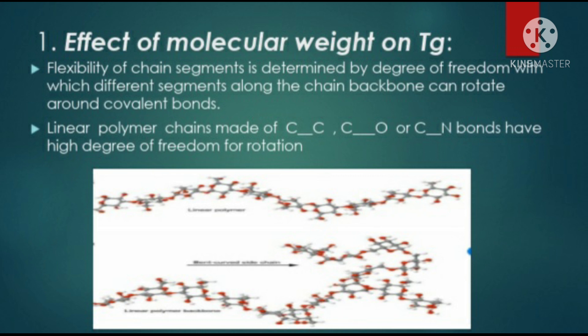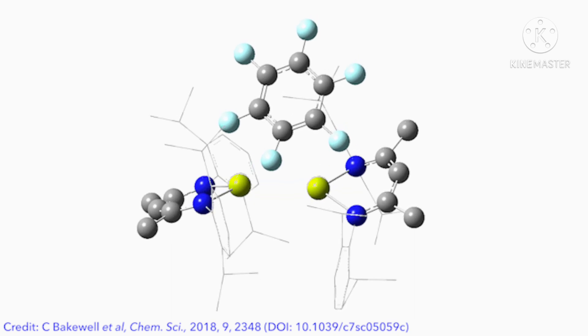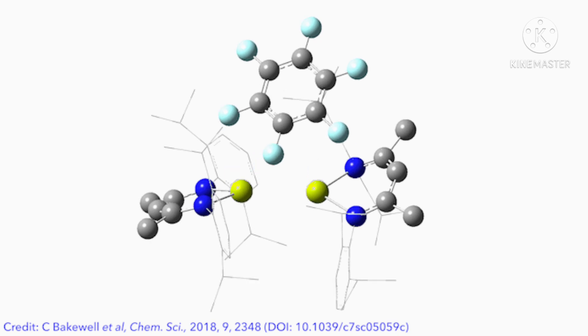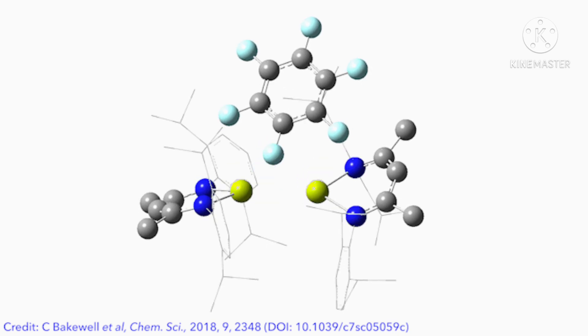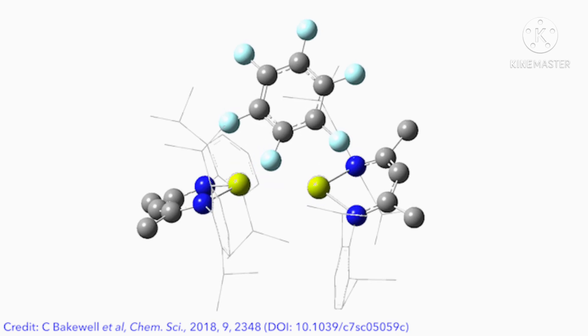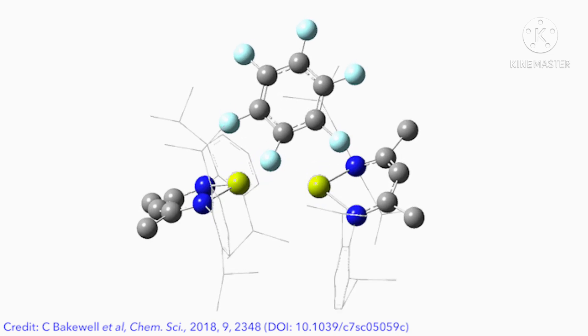The presence of aromatic and cyclic structures in the chain backbone, or of bulky side groups on the backbone carbon atom, hinders the freedom for rotation. When aromatic or cyclic structures are attached in the backbone, they cause hindrance during rotation of the covalent bond because the benzene ring does not easily rotate. The higher the freedom to rotate, the more flexible the chain segment and hence the higher the segmental mobility.